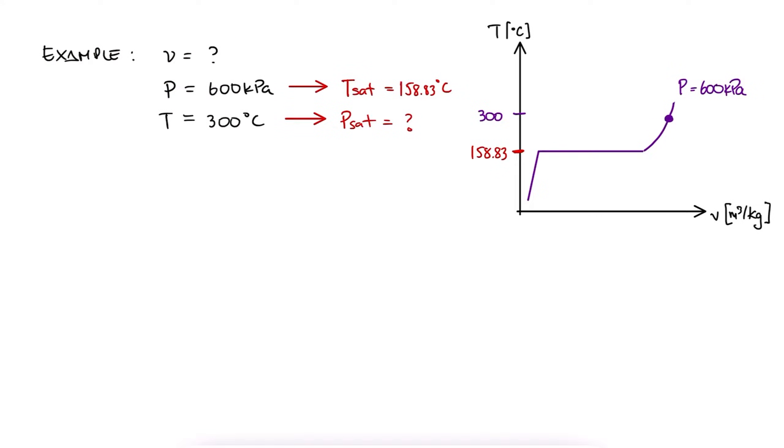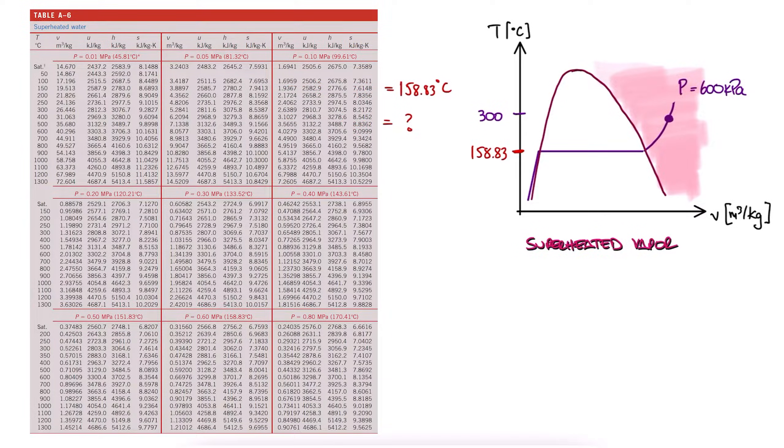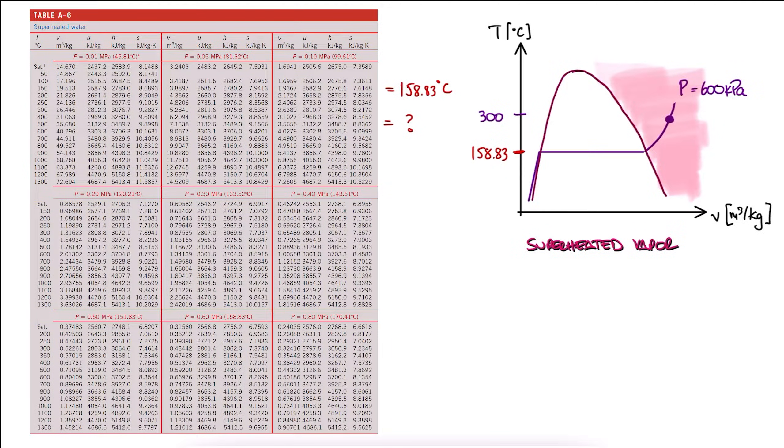Therefore, we know that at 300 Celsius, our water is superheated vapor. We then go to our superheated table, and just like it was explained during an example of the previous lecture, we see that within our table, we have subtables for different pressure values.